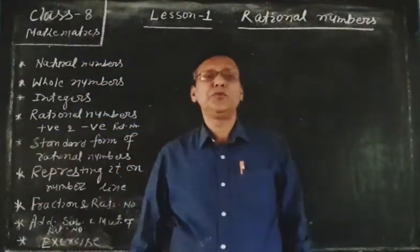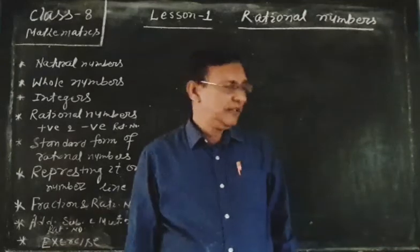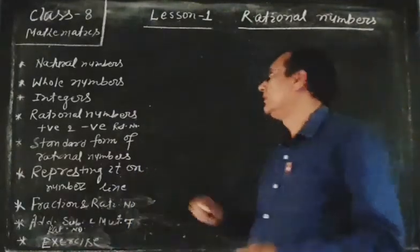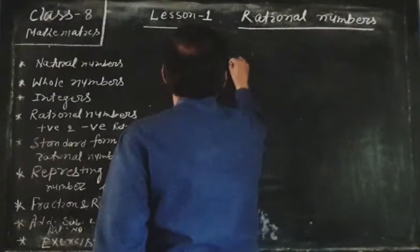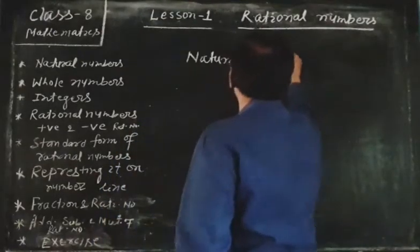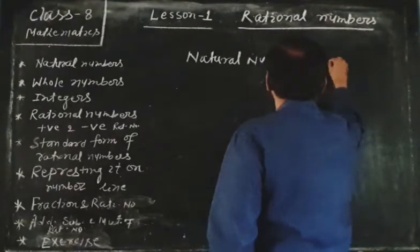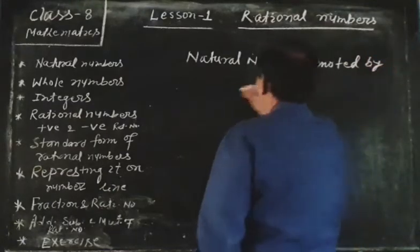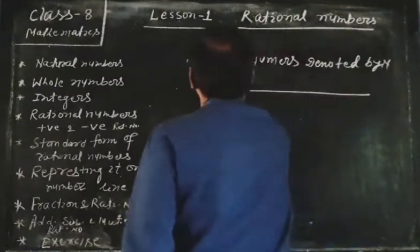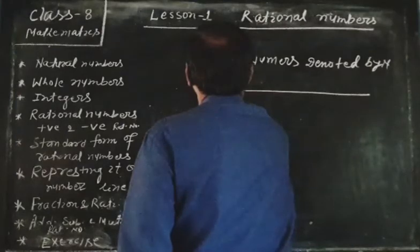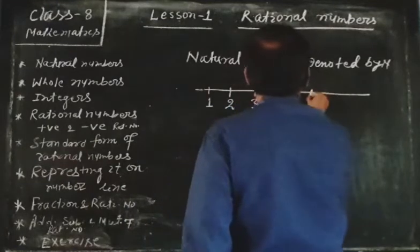It is already known to you all that counting numbers are called natural numbers. Natural numbers are denoted by N. N can be presented on the number line: 1, 2, 3, 4, 5.